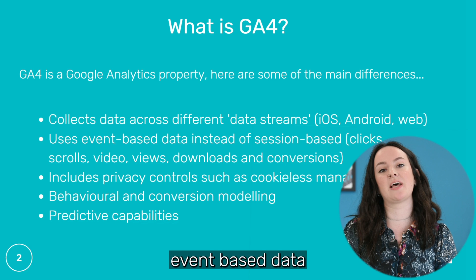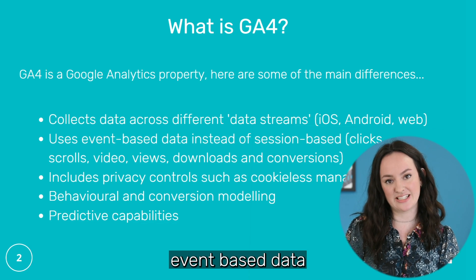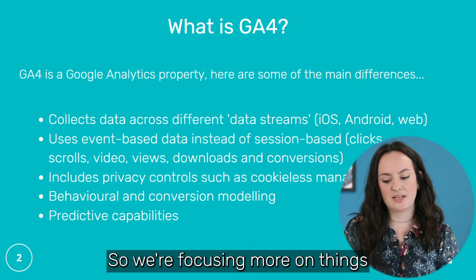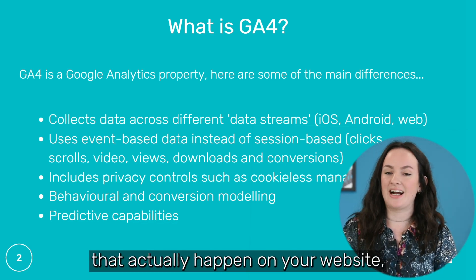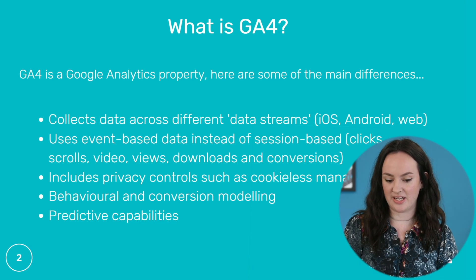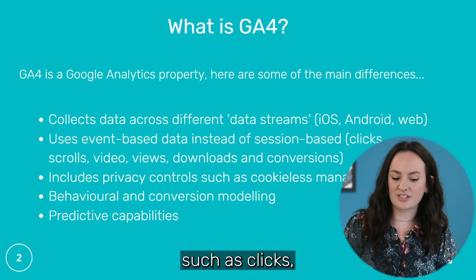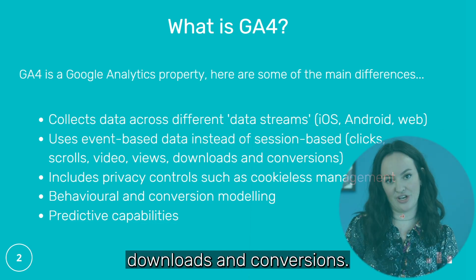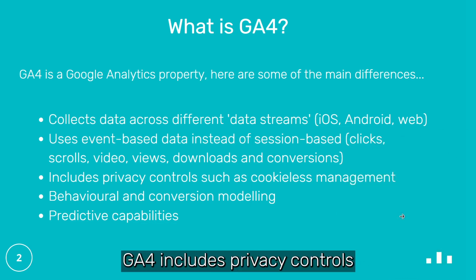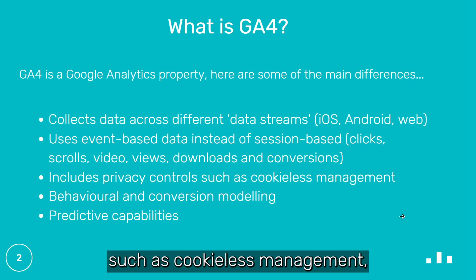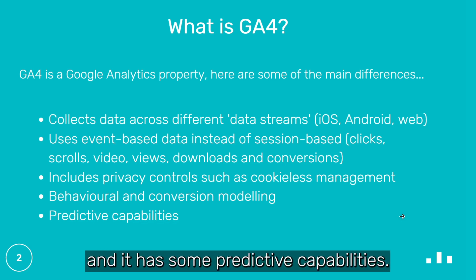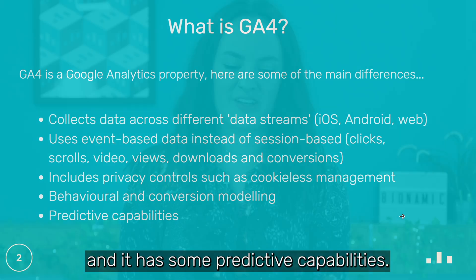GA4 uses event-based data rather than session-based data. So we're focusing more on things that actually happen on your website, such as clicks, scrolls, video views, downloads, and conversions. GA4 also includes privacy controls such as cookie list management, behavioral and conversion modeling, and it has some predictive capabilities.